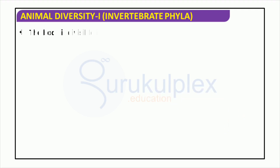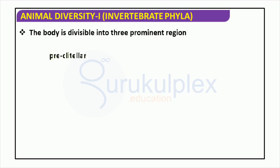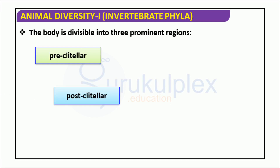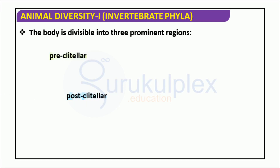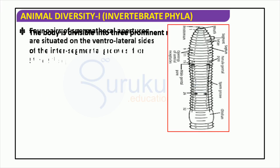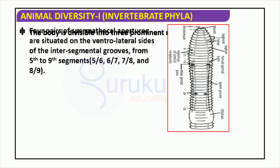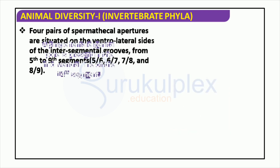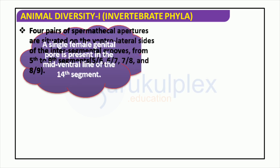The invertebrate phylum has a body divided into three regions: pre-clitellar, clitellar, and post-clitellar. There is a single female genital pore located on the mid-ventral line of the 14th segment, and two male genital pores on the ventrolateral sides of the 18th segment. Additionally, the body has nephridiopores distributed across it and four pairs of spermathecal apertures between the 5th and 9th segments.